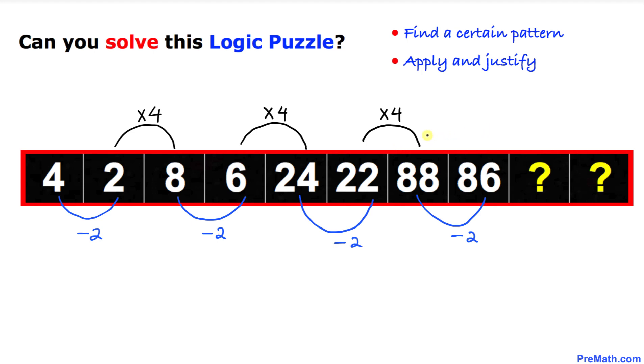If we keep repeating the same pattern, I am going to multiply 86 times 4, so that number is going to be 344. And finally the next pattern is subtracting 2, so this is going to become simply 342.